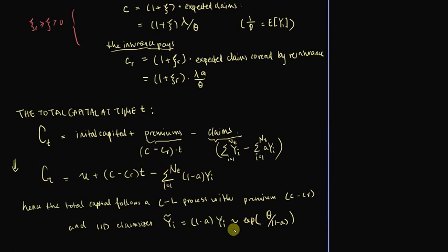There is one more thing we need to consider now that we have figured out which model we are working with, and that is when the net profit condition is fulfilled. Because if we don't know when the net profit condition is fulfilled, we essentially don't know when our model is well defined. If the net profit condition isn't fulfilled, then it doesn't make any sense to do business. So that is what we will look at in the next video.